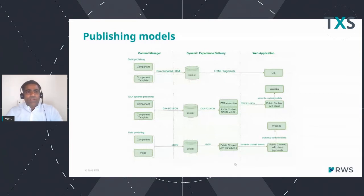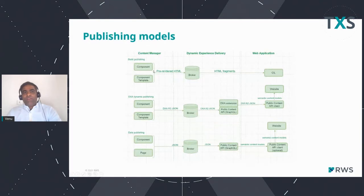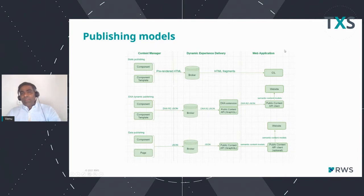The first one is called static publishing. Basically, you create a component and template and render everything together before publishing it. All the predefined pre-rendered output will be stored in the broker database, which is the dynamic experience delivery, and that can be consumed by the web application using CILs as HTML fragments. This is known to most of us — we've done this for a number of implementations.